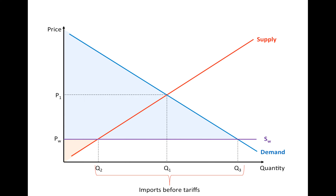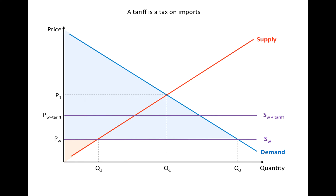Let's suppose that our government wants to reduce the amount of imports. One way it can do this is by introducing a tariff — a tax on imports. Because it's a tax, we will be affecting the cost of production of the importing firms only. This increases the cost of production by as much as the unit tax, represented by an upward shift of the world supply. At this new world supply with the new price, we will now be producing Q4 and consuming Q5, and therefore it is clear that imports have indeed fallen.